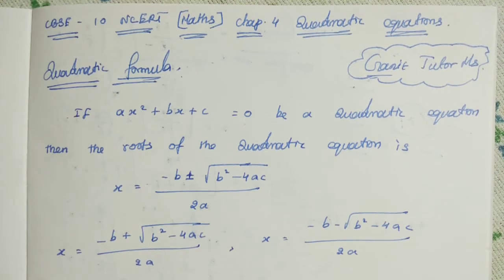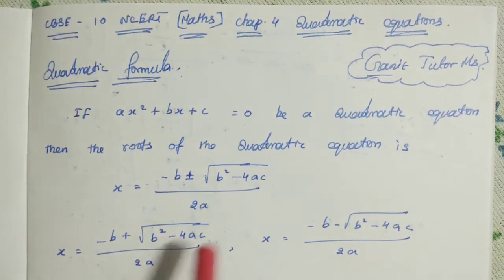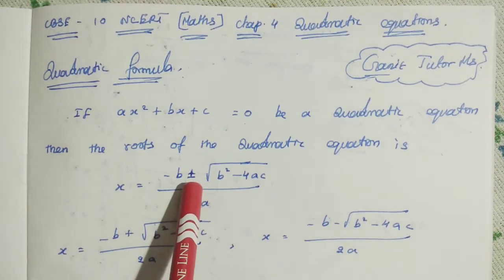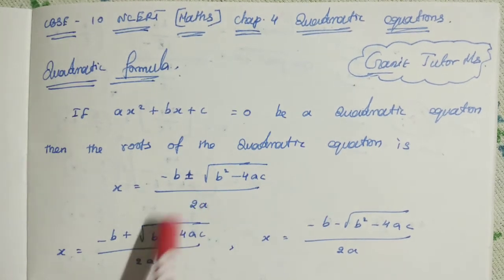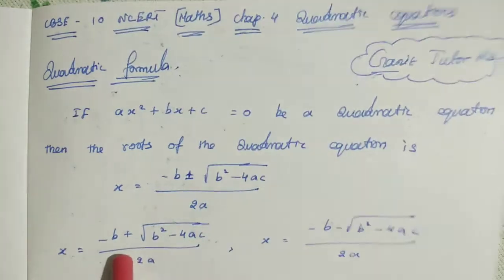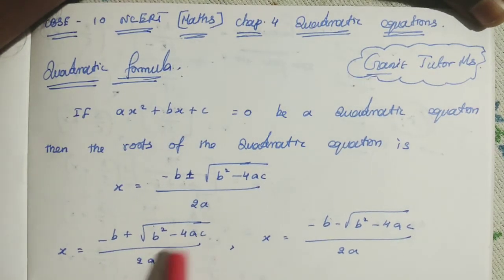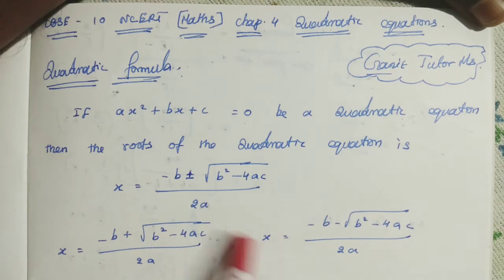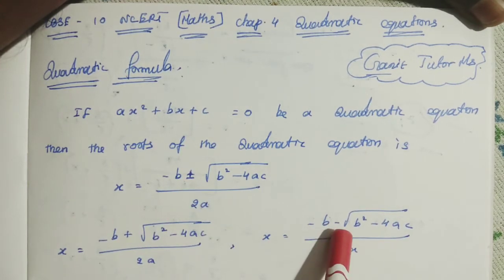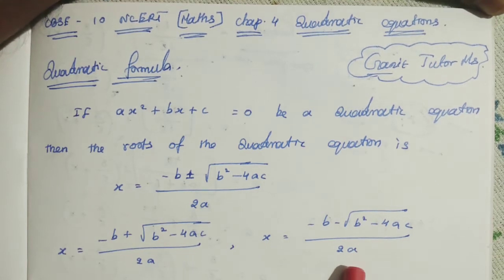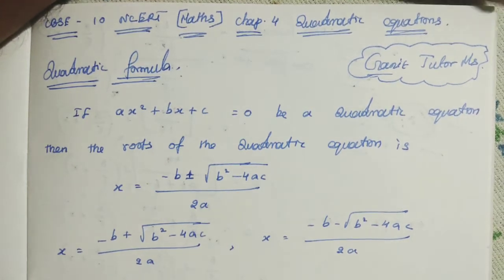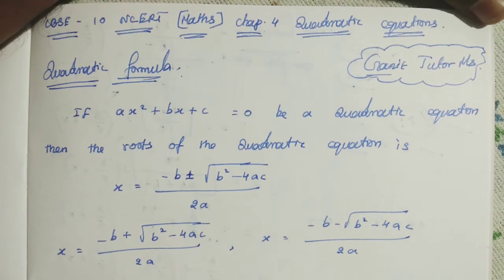We know that a quadratic equation has two roots. Here there is one formula with a plus or minus, giving one root with plus and one root with minus. So: X equals minus B plus root of B squared minus 4AC divided by 2A, and one more root: X equals minus B minus root of B squared minus 4AC divided by 2A. That is the quadratic formula we can use to find the roots of a given quadratic equation.